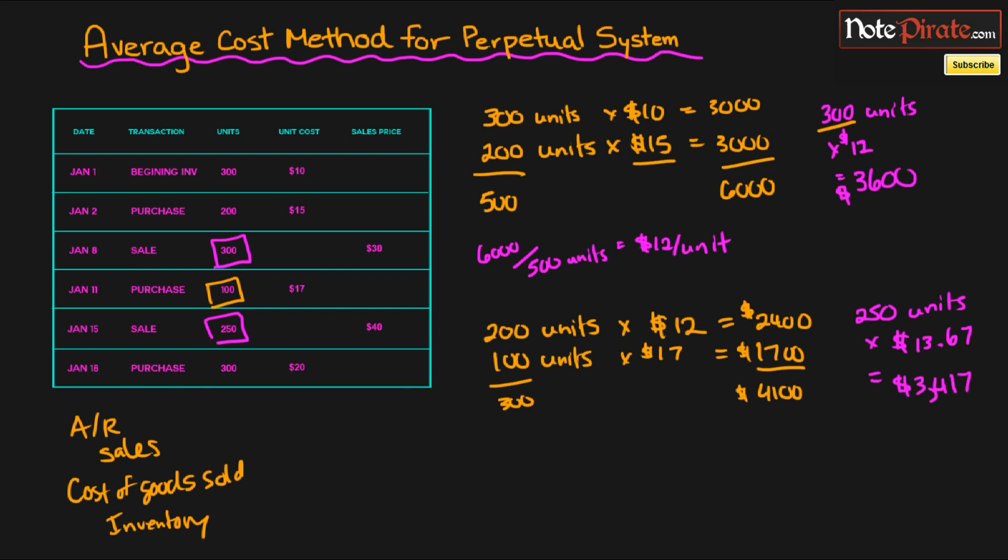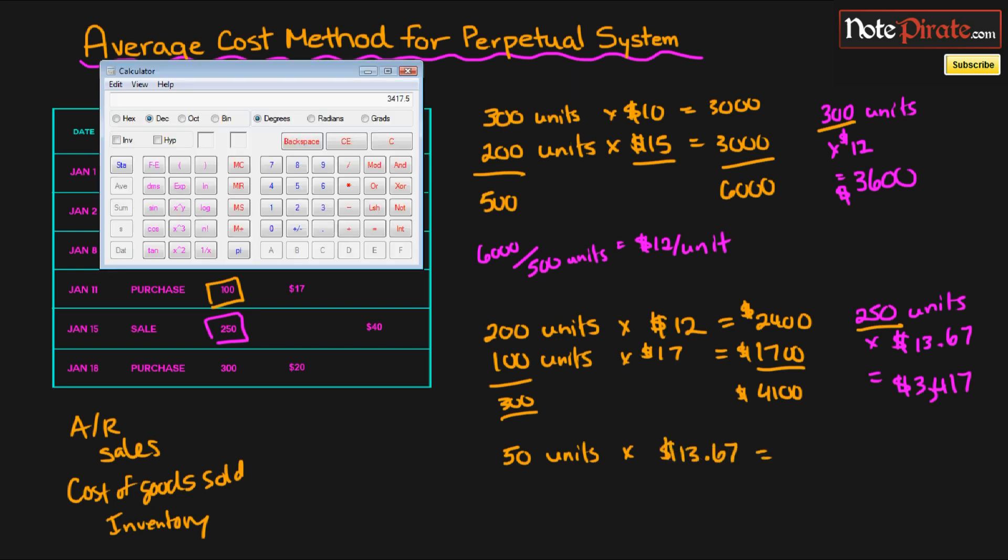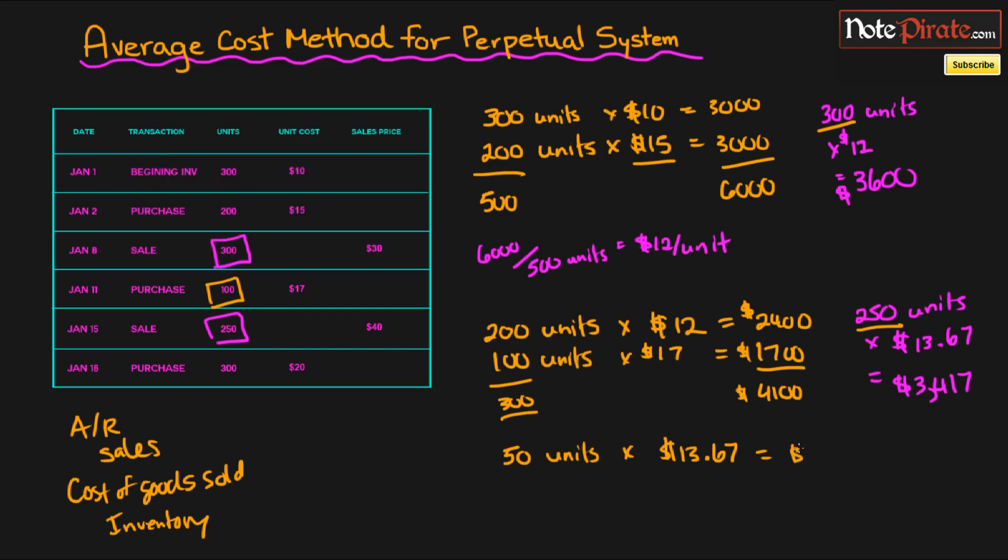And that's going to give us an amount which is $3,417, which is the cost of goods sold for that sale. And finally, now that we've sold 250 units and we had 300 units, we're going to have 50 units left at an average cost of $13.67. So what is that going to be worth? 50 times $13.67, which is $683.50. I'll just round up to $684.